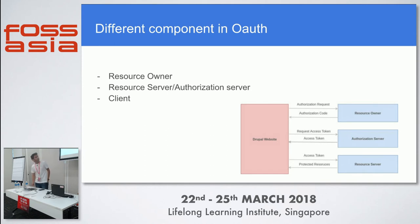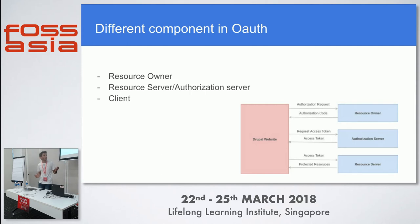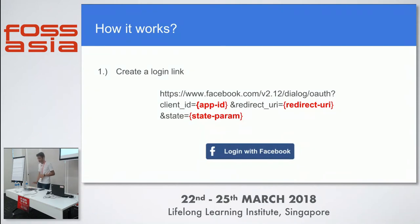Let's assume the app is a Drupal website. First, an authorization request is sent from the Drupal website to the resource owner. If the user allows that app to use their account, in return they get an authorization code which the website can use. That authorization code is then exchanged to get an access token, and finally you can use that access token to perform actions.